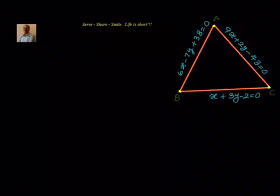So what will be our approach? First, we will try to find out the vertices A, B, and C by solving these simultaneous linear equations. Once we know the vertices A, B, C, we can apply the area of triangle formula — that is, half into sigma x1 into y2 minus y3 — to find out the area. So step one will be to find out the vertices A, B and C.